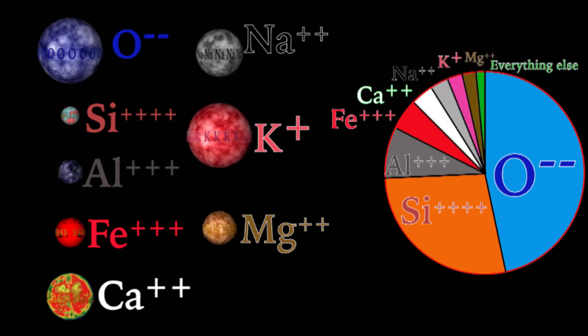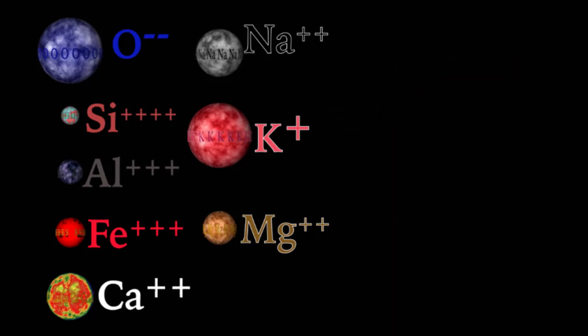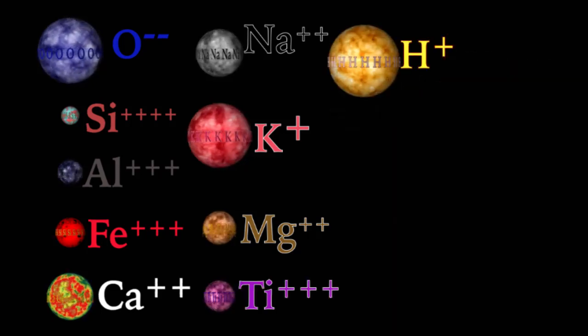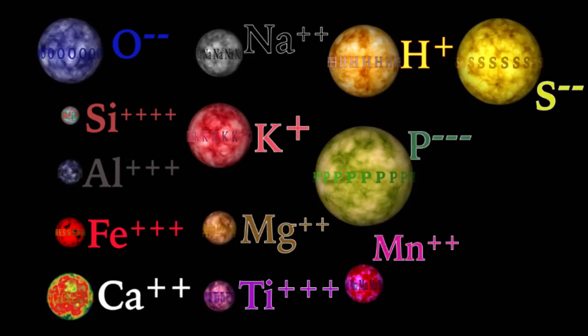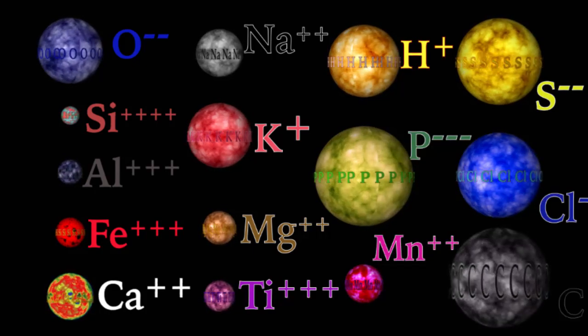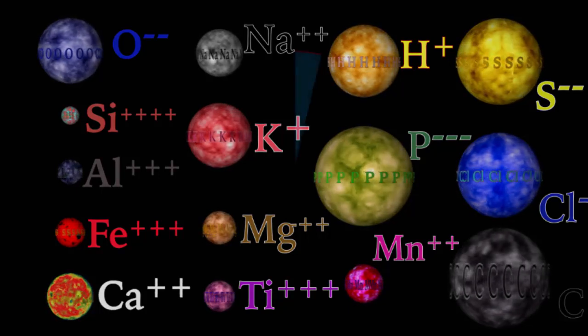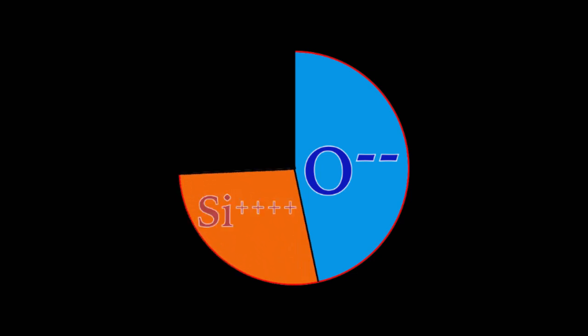Continuing on from the eighth most abundant element, magnesium, are titanium, hydrogen, phosphorus, manganese, sulfur, chlorine, and carbon. In the top two slots, oxygen makes up almost half of all crustal elements, and silicon makes up a little over a quarter of all elements.